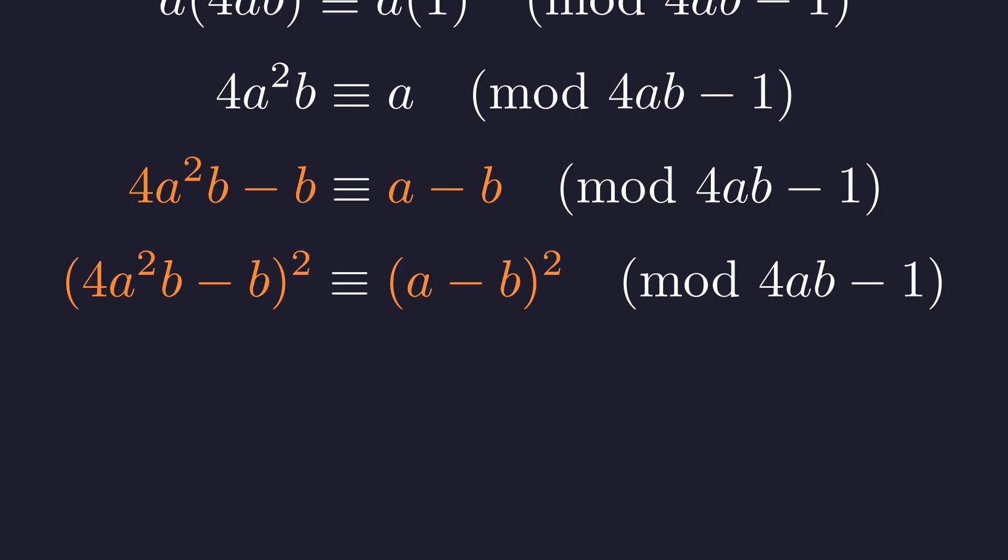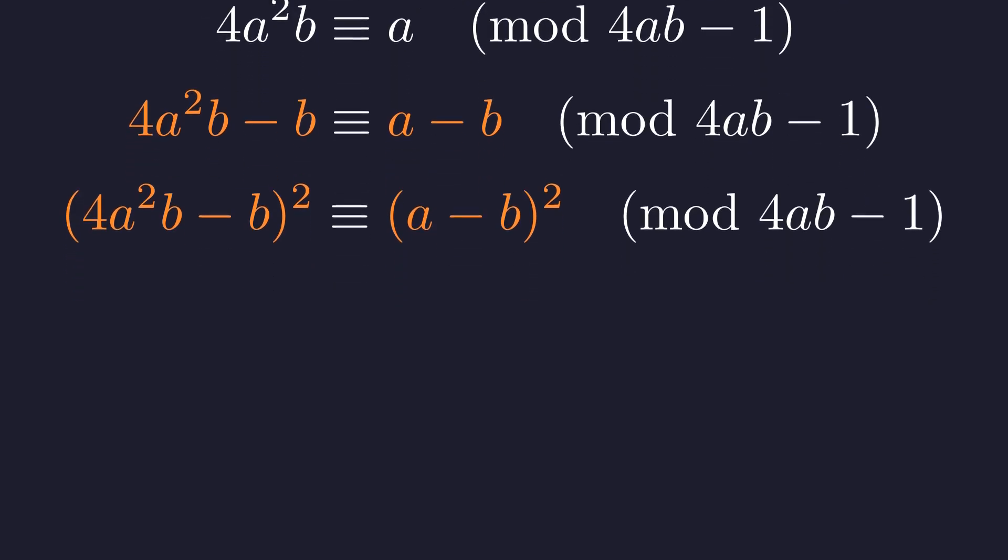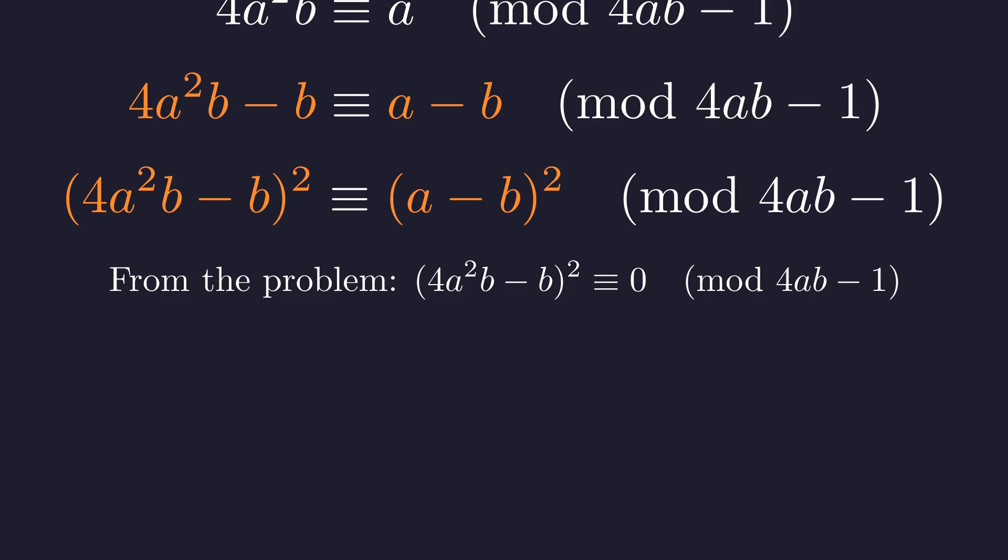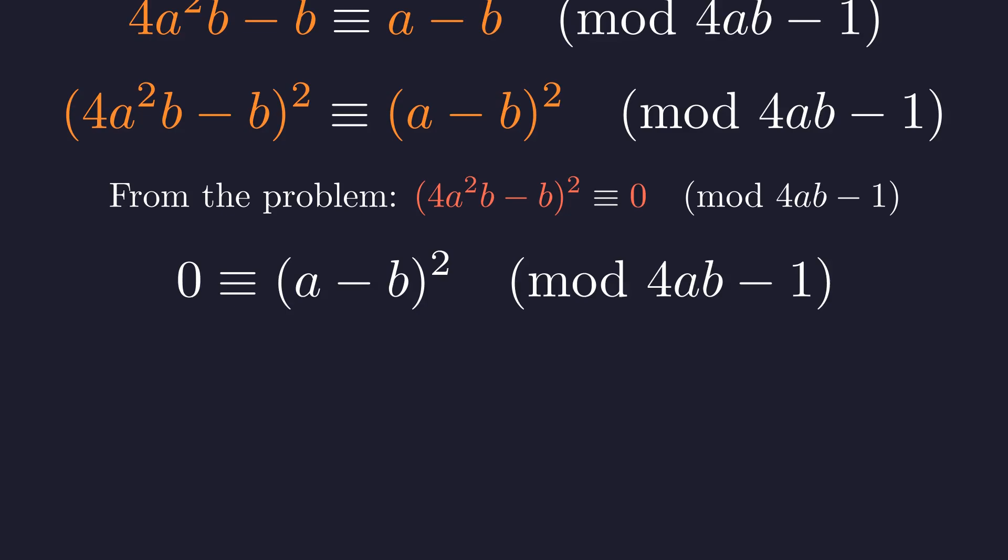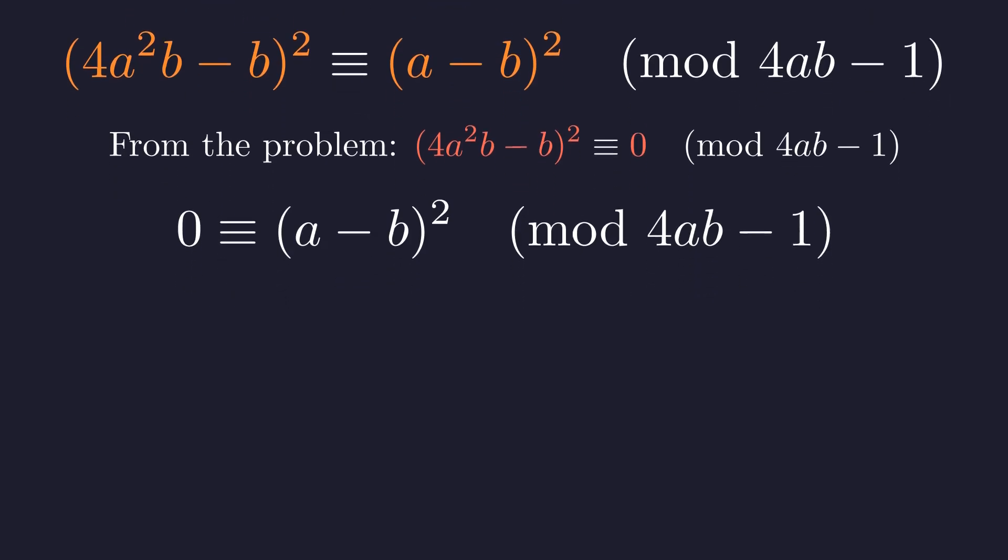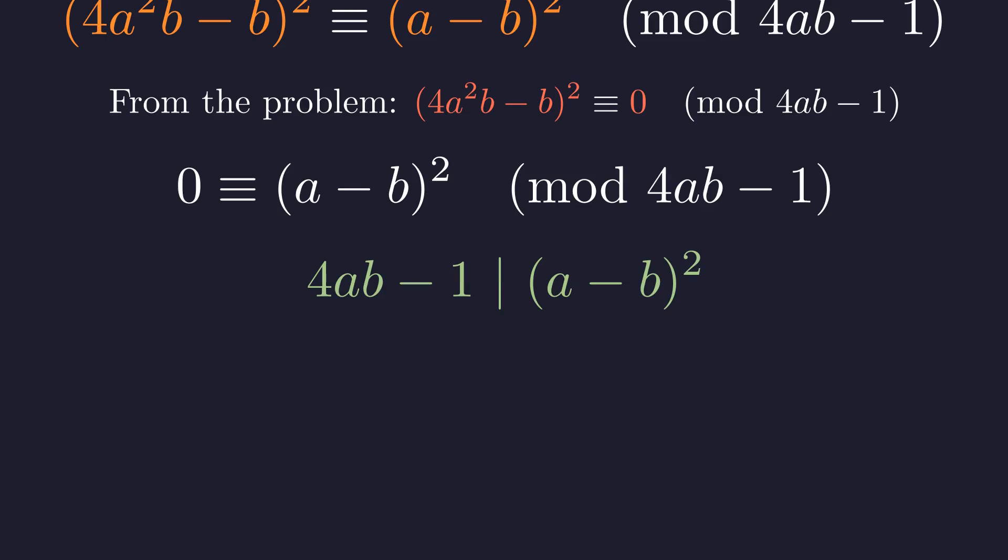Squaring both sides preserves the congruence relation. We now have two pieces of information. First, this congruence we have just derived. Second, our modified divisibility condition implies that this same expression is congruent to 0. We can now combine these two facts through transitivity. Therefore, it must be that 0 is congruent to the square of A minus B. This is the breakthrough. We have reduced the complex initial condition to this simplified symmetric form. The problem is now reduced to analyzing this new relationship.